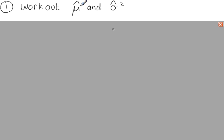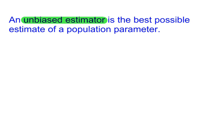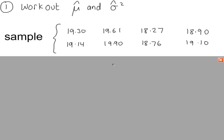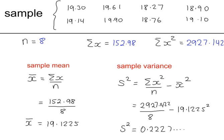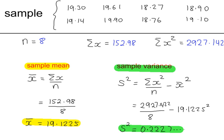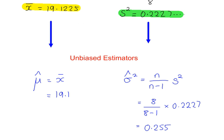Example 1. We're going to work out unbiased estimates of the population mean and variance. An unbiased estimator is the best possible estimate of a population parameter. Here is the random sample, and for this random sample we've worked out the sample mean and sample variance. Now we can use these two to work out the unbiased estimators for the population mean and variance, so the sample variance is multiplied by n over n-1.